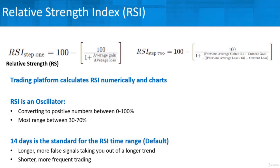Basically, what an oscillator does is convert values to positive numbers between 0 and 100%. With rate of change, we had a zero line and could be above or below 0. With RSI, there's nothing below the zero line — it's all positive numbers. Most of what you'll see will range between 30 and 70%. The default for RSI, as it was originally developed, is 14 trading days, which is the standard time range for RSI.